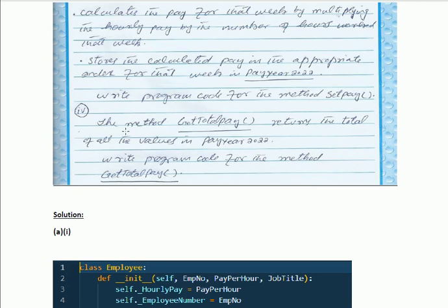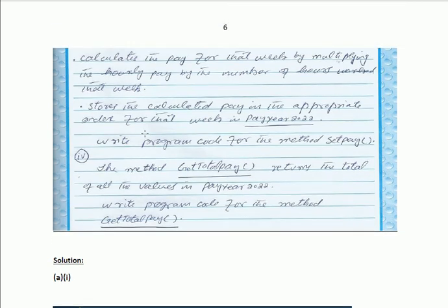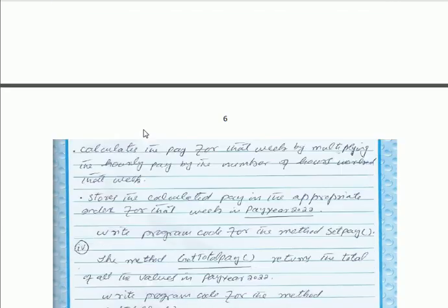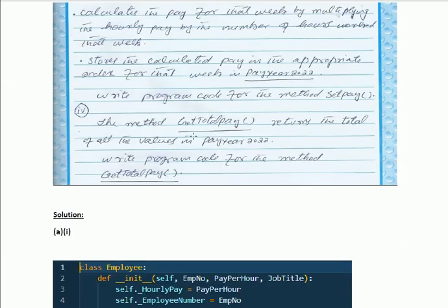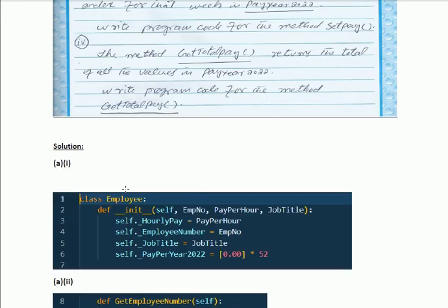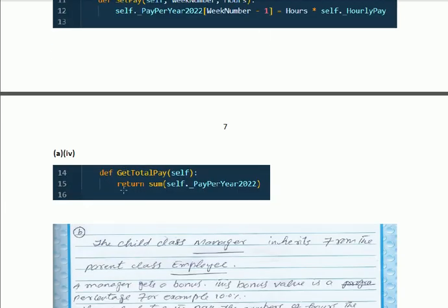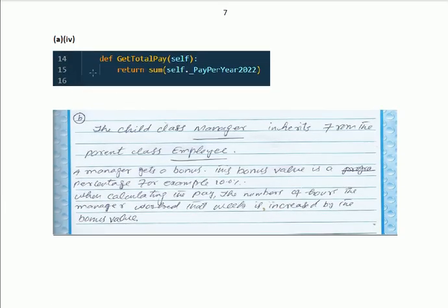For part a last: the method get_total_pay returns the total of all the values in pay_year_2022. Write program code for the method get_total_pay. We write get_total_pay — taking self and returning the sum of all the pay values in pay_year_2022.